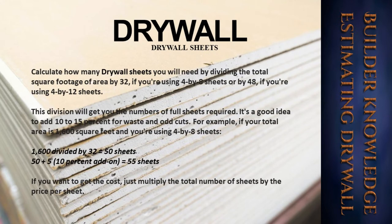Next, calculate how many drywall sheets you will need by dividing the total square footage by 32 if you're using 4×8 sheets, or by 48 if you're using 4×12 sheets. This gives you the number of full sheets required. It's a good idea to add 10 to 15 percent for waste and odd cuts. For example, if your total area is 1,600 square feet and you're using 4×8 sheets: 1,600 divided by 32 equals 50 sheets; 50 plus 5 (the 10% add-on) equals 55 sheets.